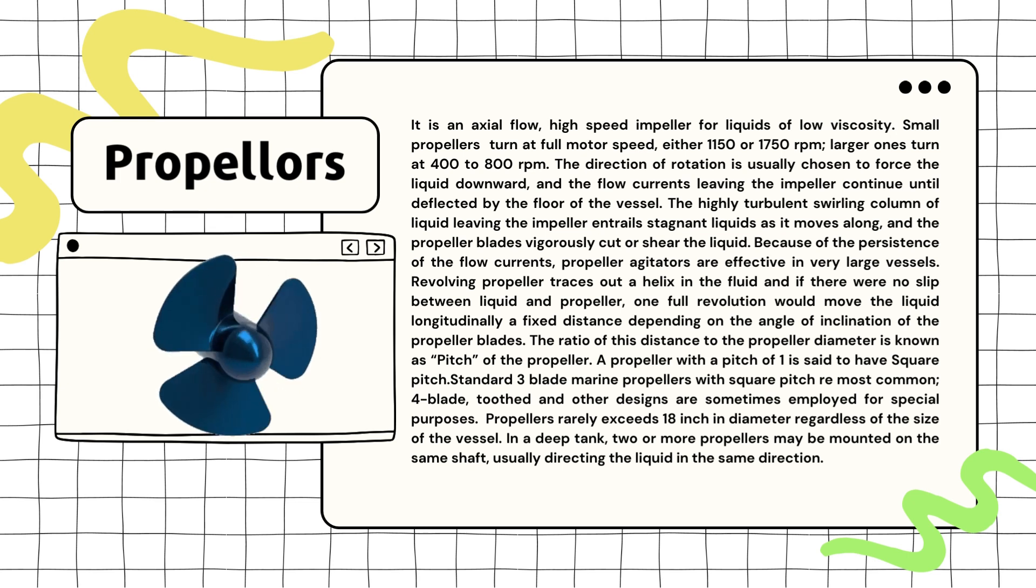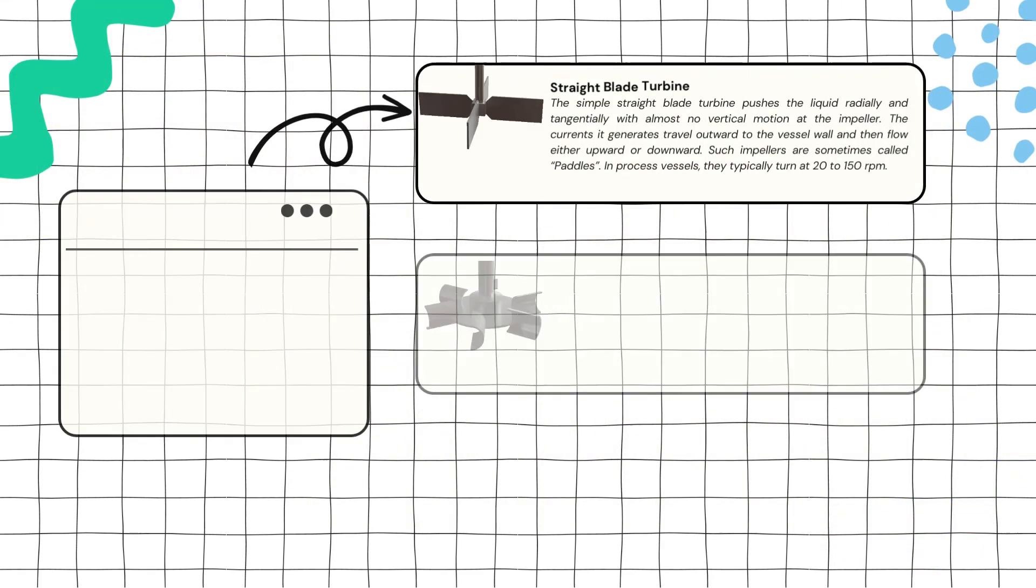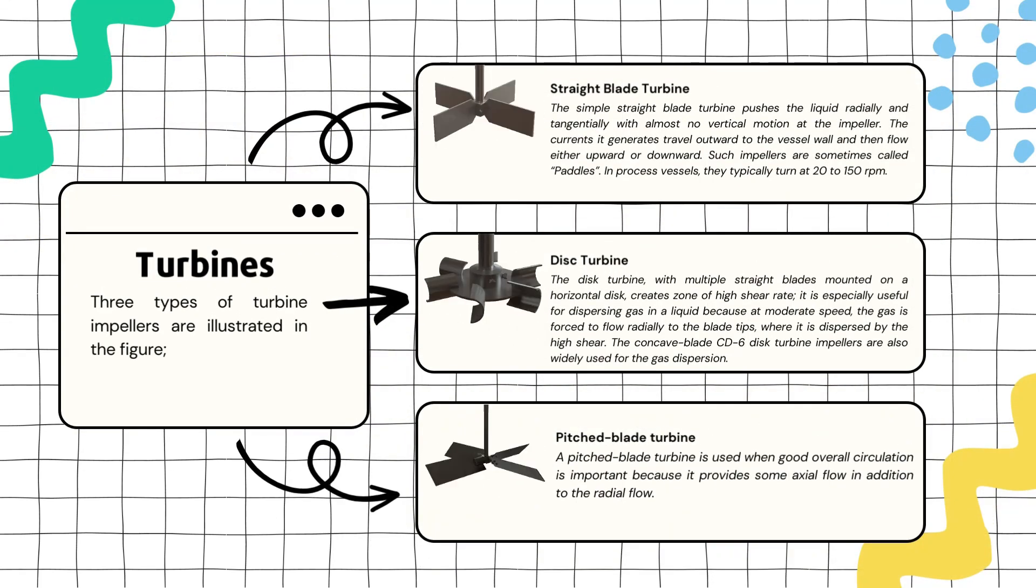That's a brief about propellers. Next comes a famous type of agitator: turbines. In the case of turbines, we will understand them by classifying into four types. The first is the simple straight blade turbine, which is also popularly known as paddles.